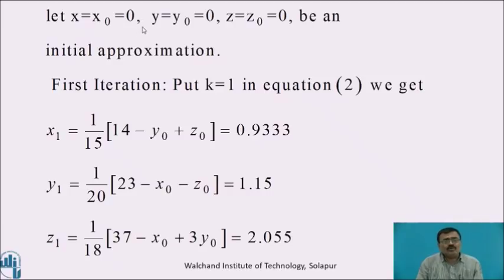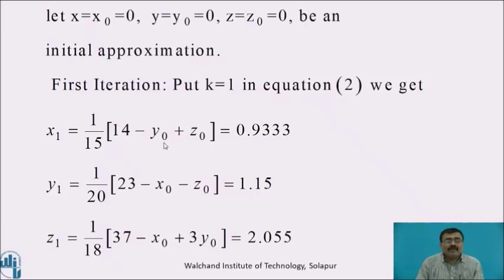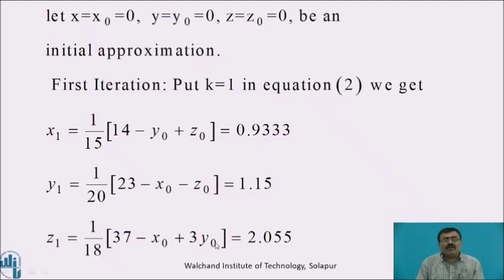Let x0 = 0, y0 = 0, z0 = 0 be the initial approximation. To find the first approximation, put k = 1 in equation 2: x1 = 1/15 × (14 − y0 + z0) = 0.9333; y1 = 1/20 × (23 − x0 − z0) = 1.15; z1 = 1/18 × (37 − x0 + 3·y0) = 2.0556.